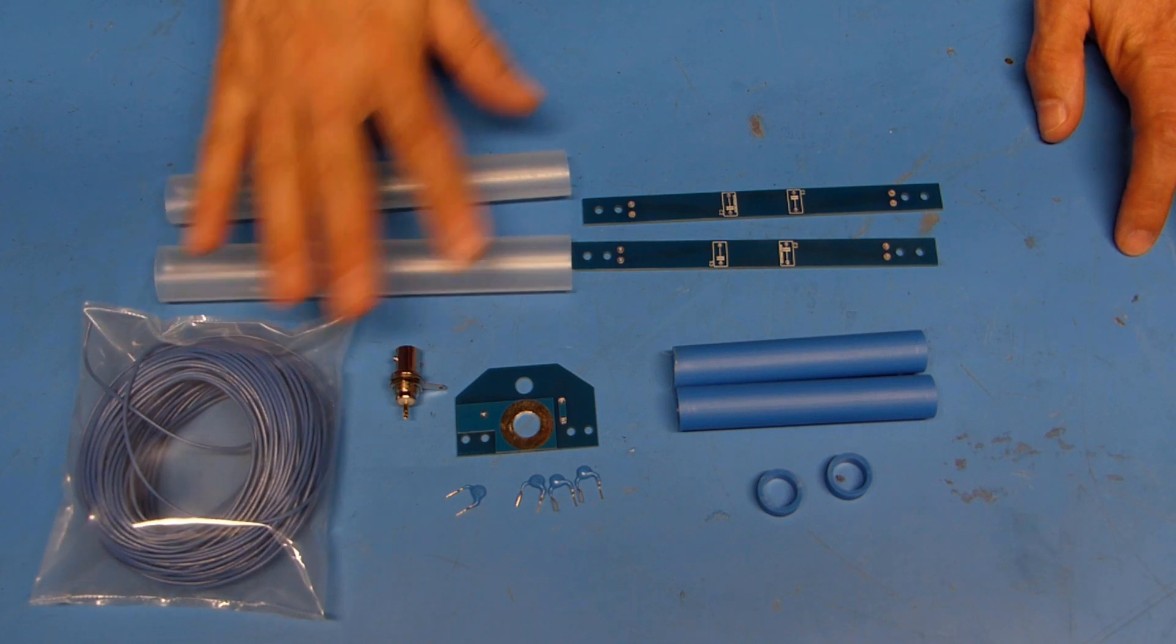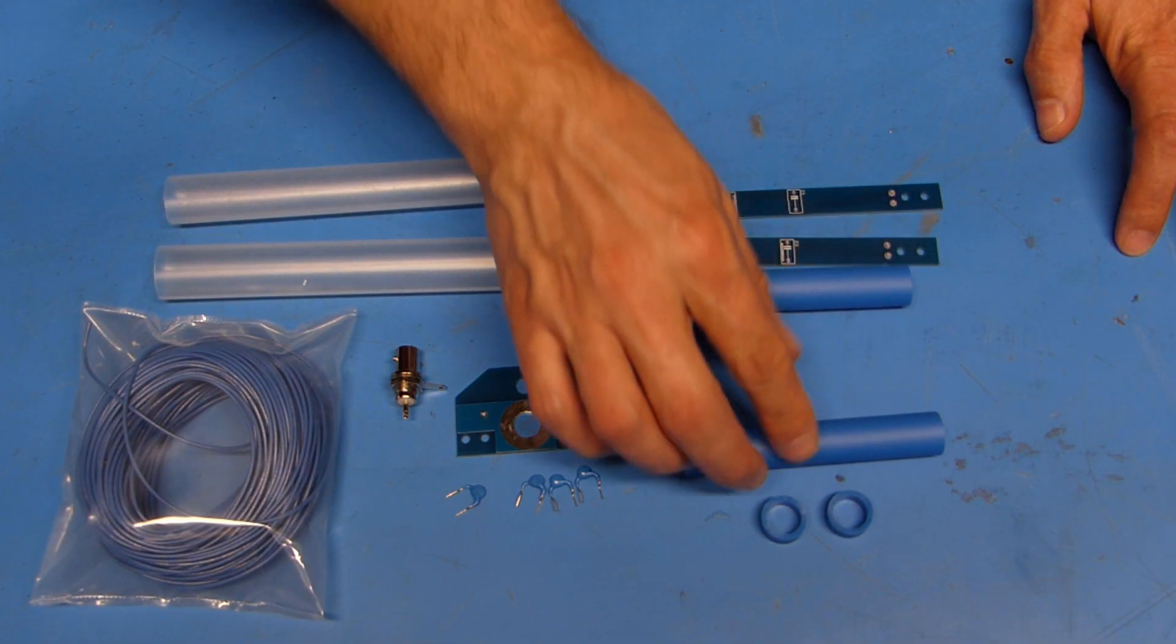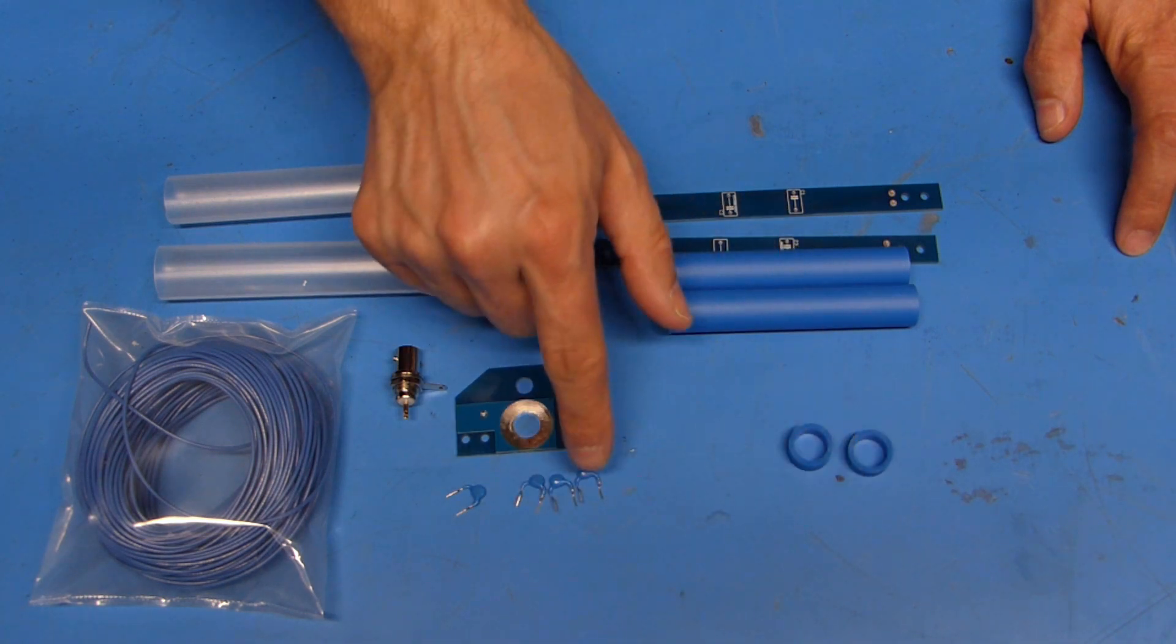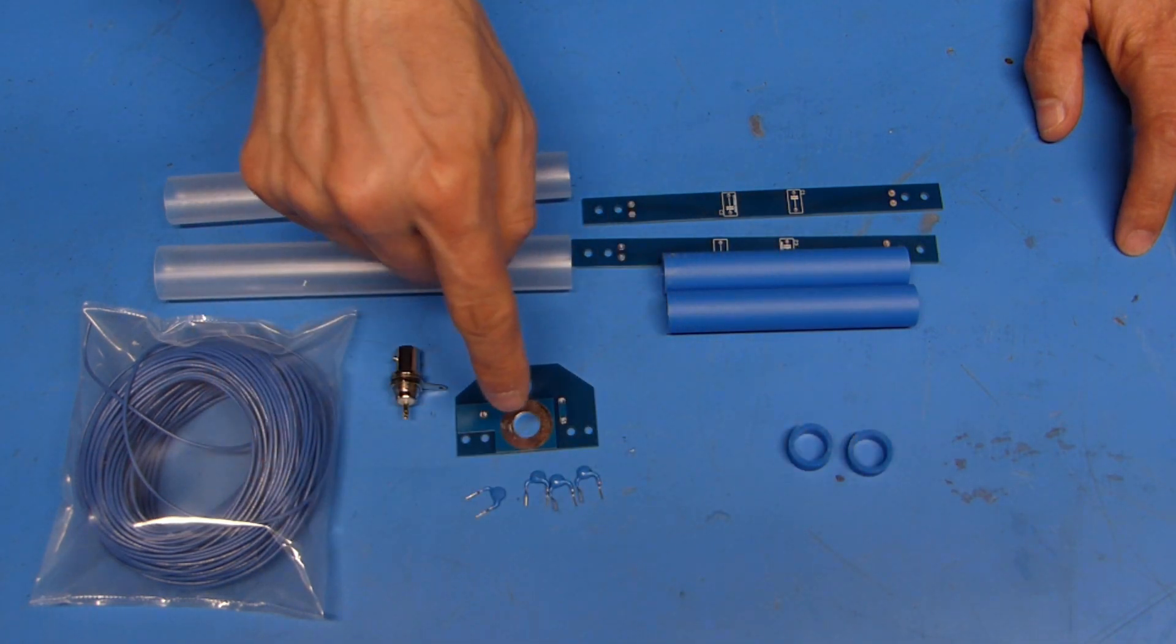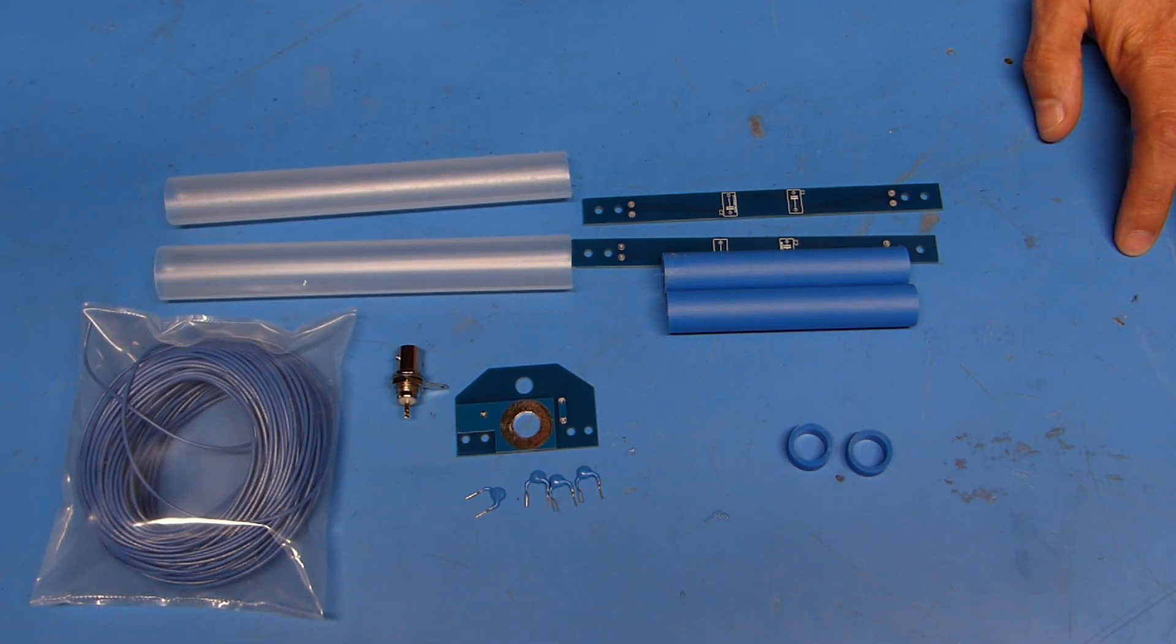I think I've got everything that I'm supposed to have according to the manual. Got the heat shrink tubing, I got these two long skinny circuit boards, a couple of tubes here, a couple of rings here, one two three four capacitors, another circuit board, BNC connector, and of course the wire here.